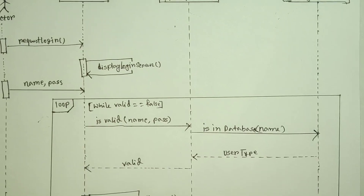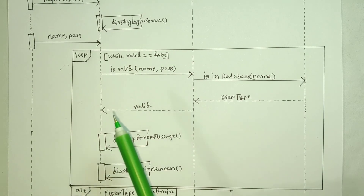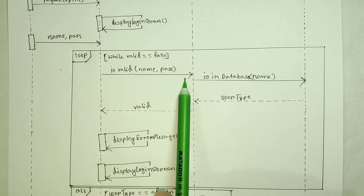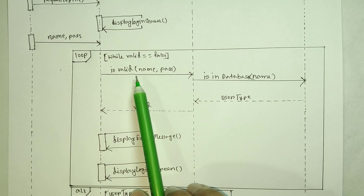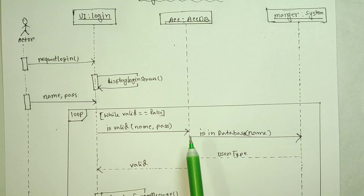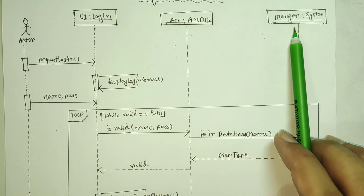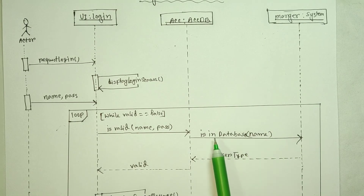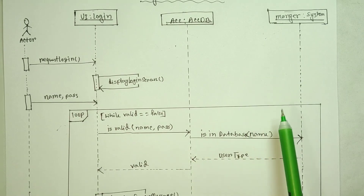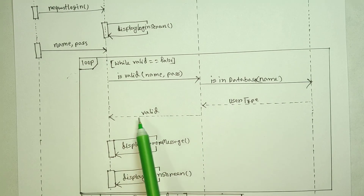There is a loop — loop while valid is false. It checks the valid password against the database. If you check the name and password, the database looks for the record. The manager sees the reply and the user type. Then check the valid.